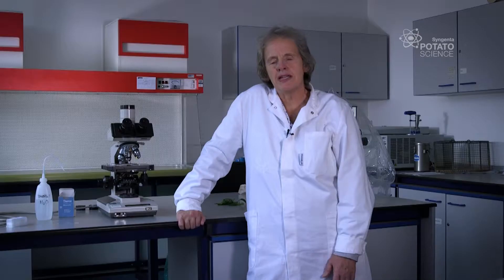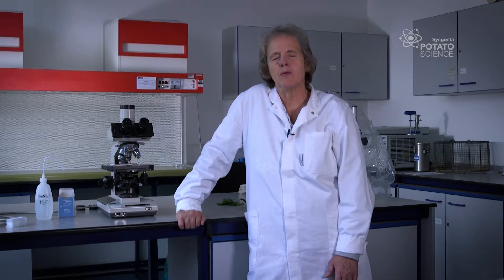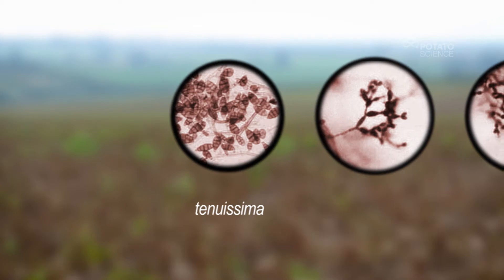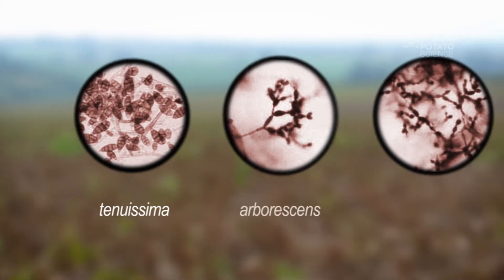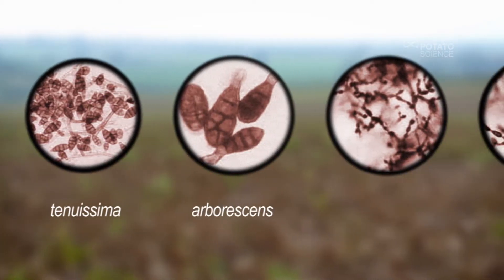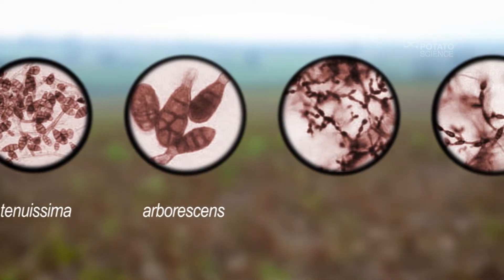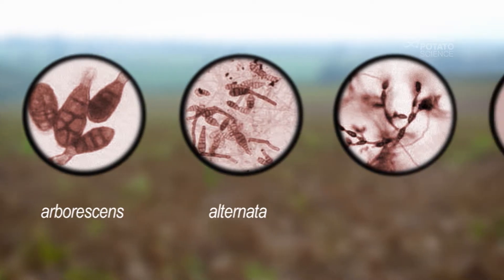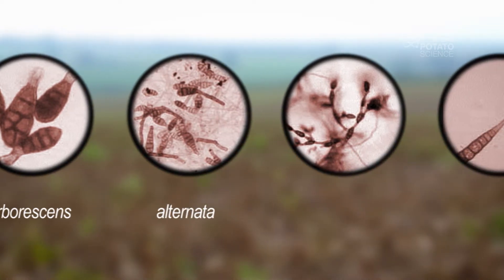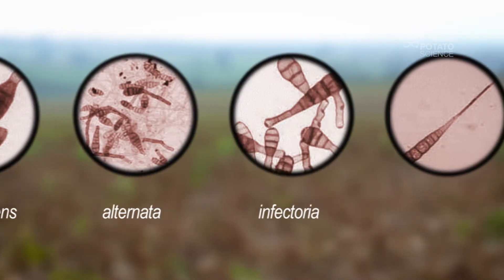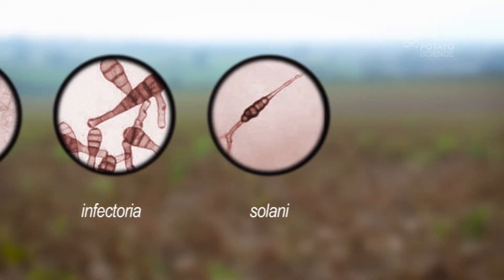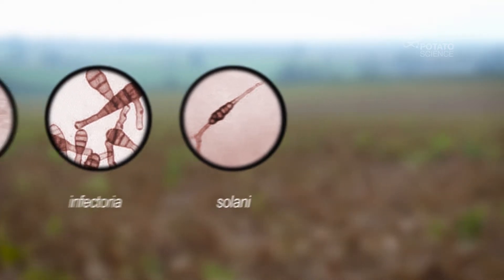It is more or less what we expected to see, but what we don't understand is how important these so-called secondary Alternaria species are — whether they're really a part of the disease complex, or whether Alternaria solani is the main species involved.